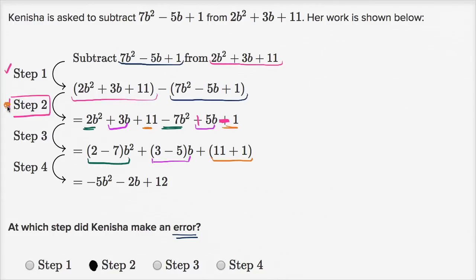So her real mistake was clearly in step two. Because from there on, she's doing reasonable things. It's just she made that one error.